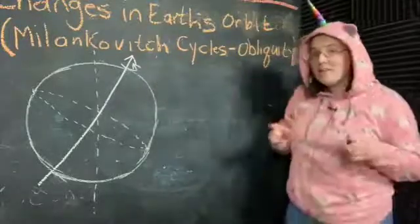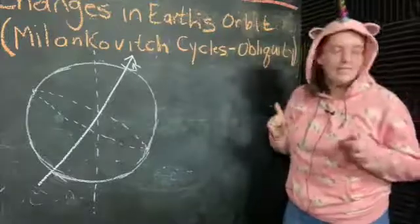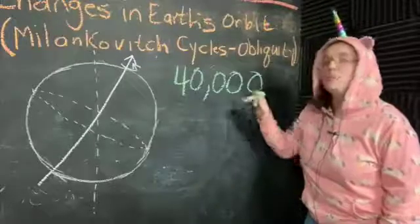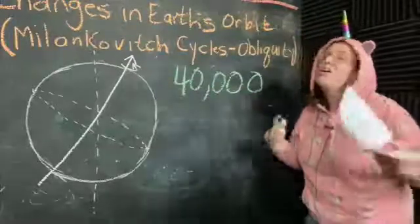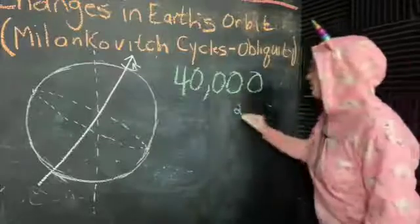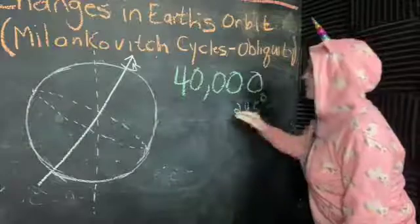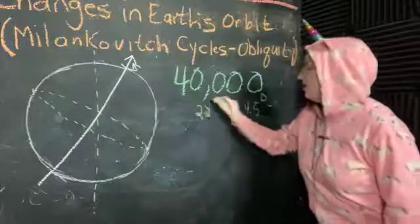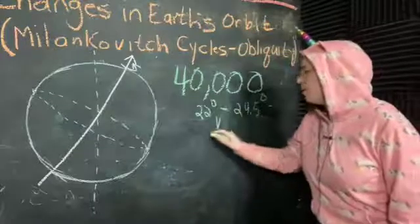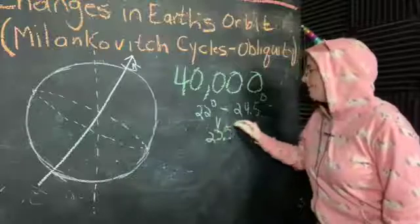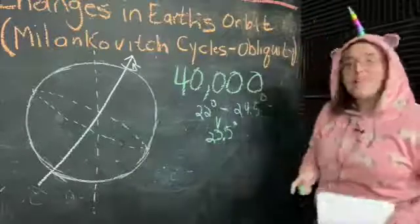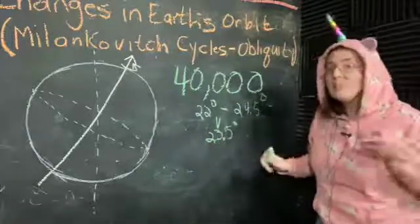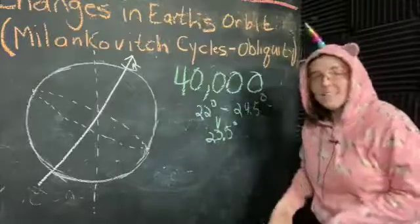And obliquity has a period of 40,000 years. Let me grab a piece of chalk. Over the course of 40,000 years, our obliquity gets as big as 24.5 degrees and as small as 22 degrees. And then, like I said, right now we're at 23.5 degrees. So I bet you're thinking to yourself, that doesn't seem like a very big change. It certainly is big enough for us to have noticeable climate effects from it.